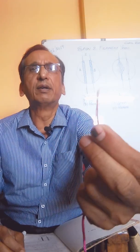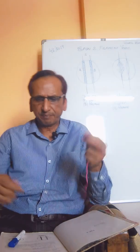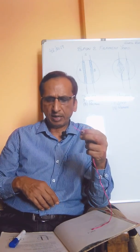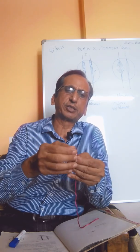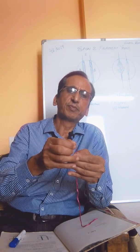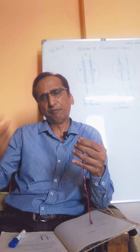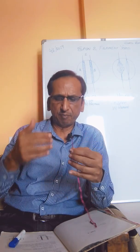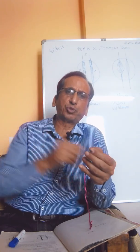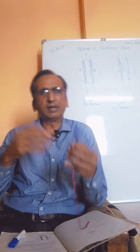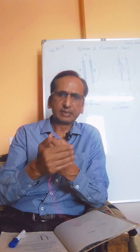Another form is a number of filaments laid together without twist. In this case, another form is a number of filaments laid together with slight twist, and another way of making yarn is a single filament yarn.